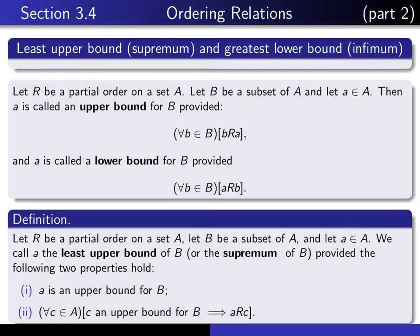Now we're ready to say what we mean by least upper bound of B and greatest lower bound of B. R is a partial order on a set A, B is a subset, and A is an element of A. Then we call A the least upper bound of B — we also refer to it as the supremum of B — provided two properties hold: first, A should be an upper bound; and secondly, given any other upper bound, A is less than or equal to that upper bound. In other words, it's the smallest of all possible upper bounds, where we measure smallness by the partial order R.